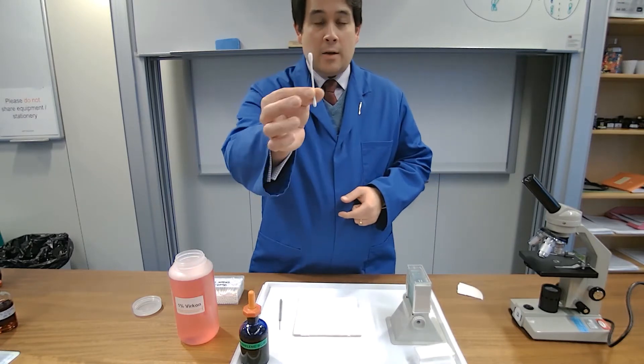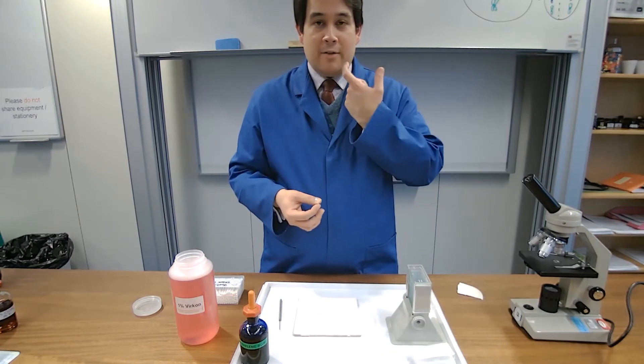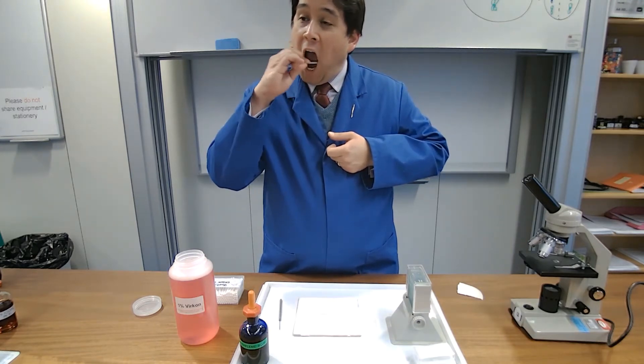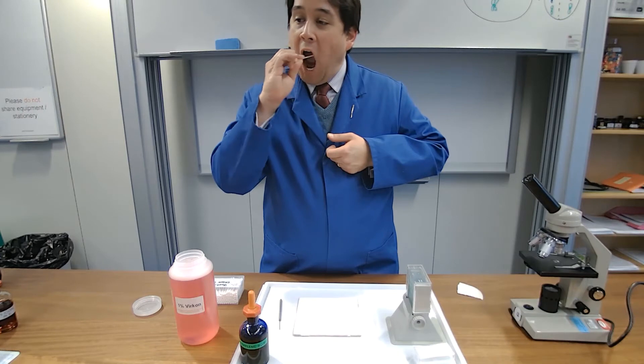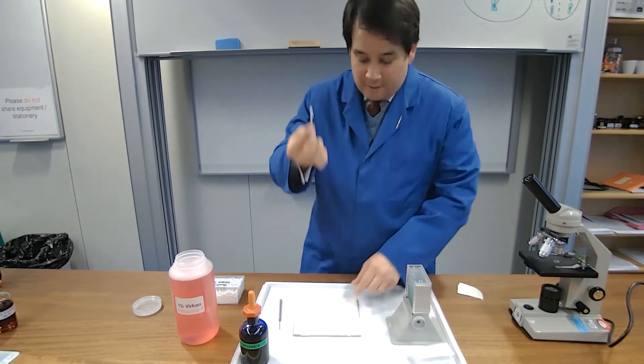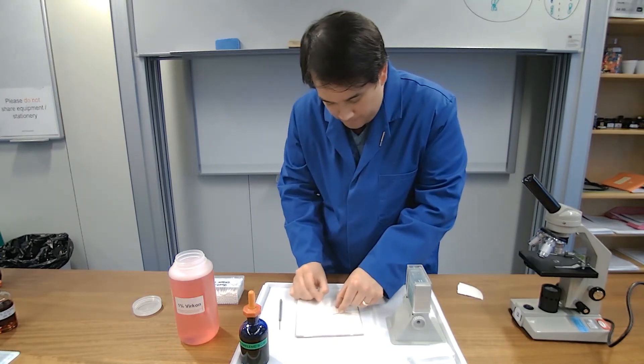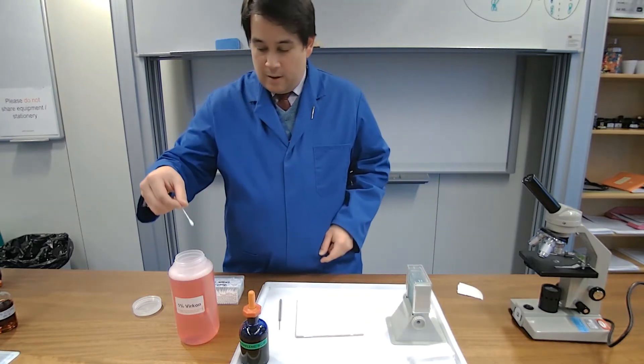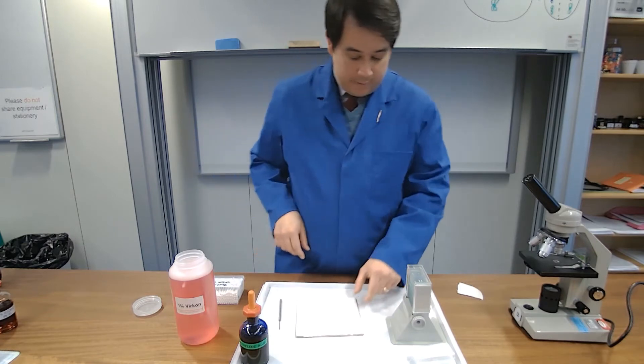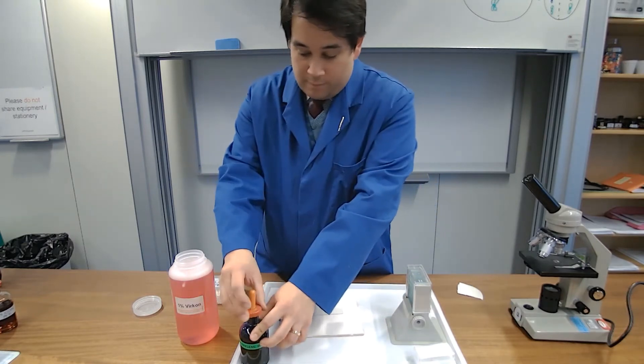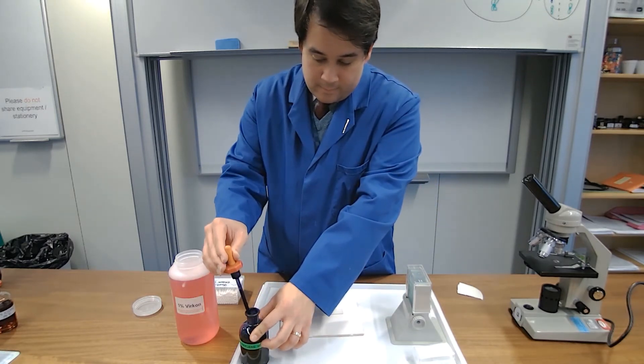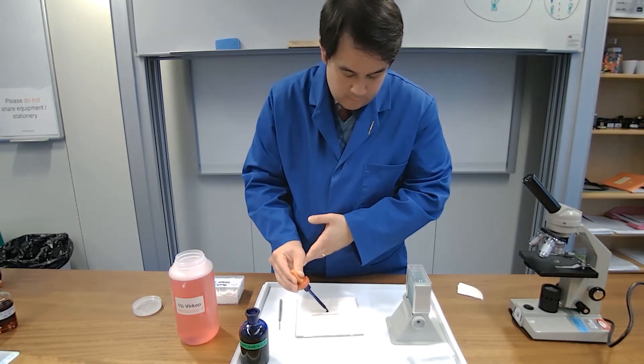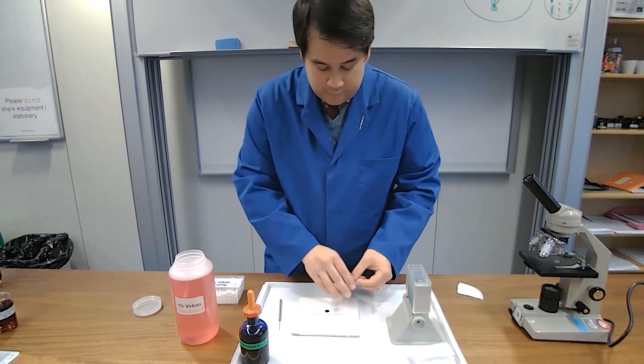So here we go, cotton bud at the ready, buccal cavity which is the inside of the cheek, scraping the epithelial cells off. I'm then going to put that straight onto the slide, cotton bud straight into the disinfectant, then one drop of the stain, all you need, cover slip straight on.